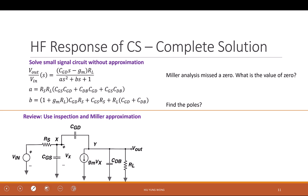We find the two poles by inspection. If you really solve the small signal circuit only for the high frequency part, not the low frequency part, you get something like this.